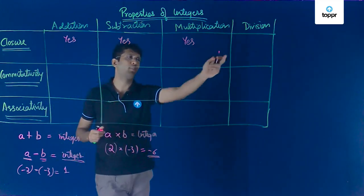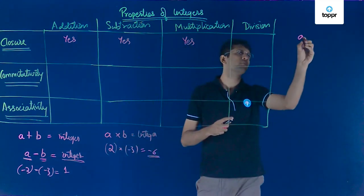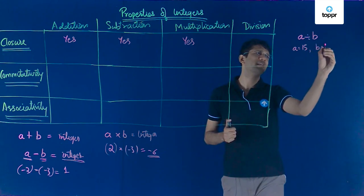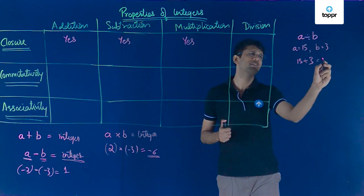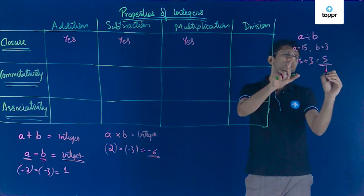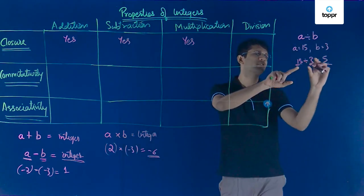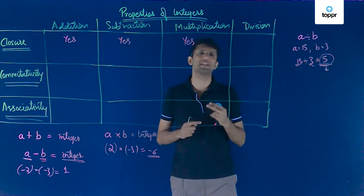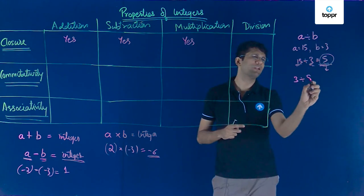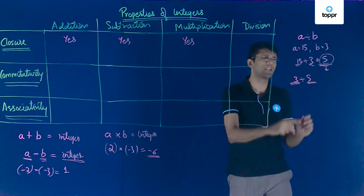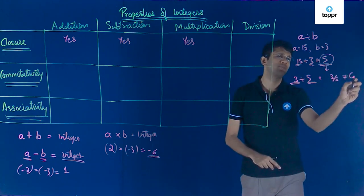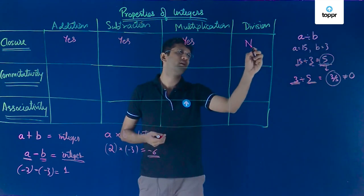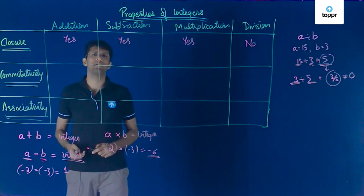So for integers, addition, subtraction, and multiplication all three follow the closure property. Now let us look at division. If a = 15 and b = 3, then a ÷ b = 5, which is an integer. But this is not always the case — for example, 3 ÷ 5 gives 3/5, which is not an integer. Therefore division does not follow the closure property for integers.